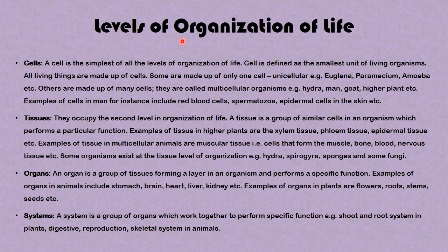Let's look at the levels of organization of life. Starting out with the cell — a cell is the simplest unit of living organisms. All living organisms are made up of cells. Some are made up of only one cell, which makes them unicellular; examples are euglena, paramecium, amoeba, and so on. Others are made up of many cells; they are called multicellular organisms. Examples are hydra, man, goat, and higher plants.